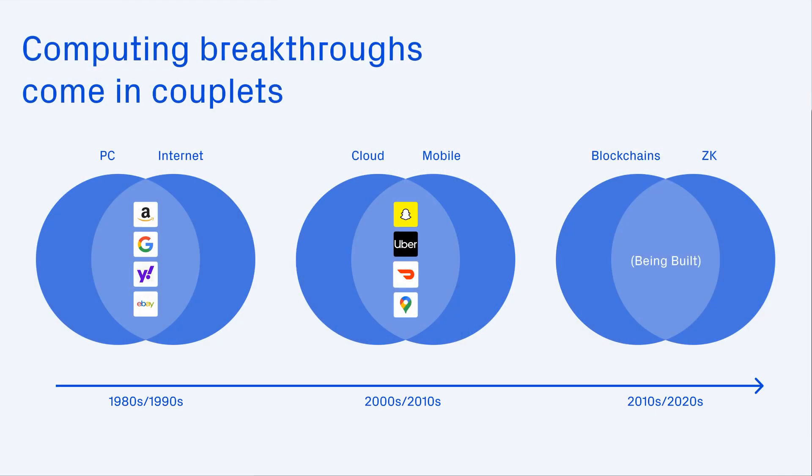They created new superpowers and led to a Cambrian explosion of applications. With PCs and the internet, we got apps like Google, Yahoo, eBay, and Amazon. With cloud and mobile, we got applications like Uber, DoorDash, Snapchat, Maps, and much more. We think this same coupling phenomenon is happening now again with smart contract blockchains and zero-knowledge cryptography.